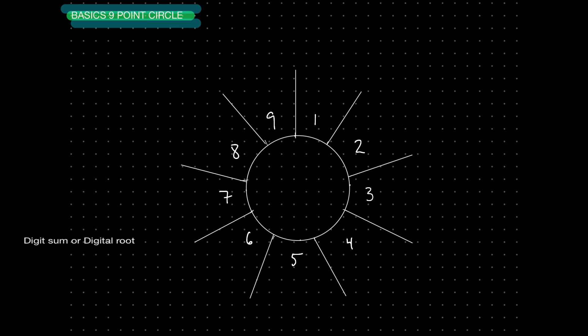Let's give you a problem. If I have the number 293 and I ask you which spoke does that land on — right off the bat, I can see that's going to land on spoke number 5. Simply cross out the 9 and add 2 plus 3. 2 and 3 gives me 5. So 293 is going to land on spoke number 5.